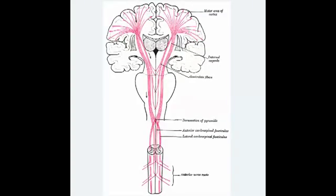What is the function of the Lateral Corticospinal Tract? The function of the Lateral Corticospinal Tract is to provide descending voluntary movements of the contralateral limbs.